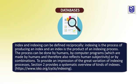We have to understand which is the process and what is the product. The process can be done by humans, by computer programs which are made by humans and therefore also refers to human subjectivity, or by a combination, to provide a greater variation of indexing processes. Section 2 provides a systematic overview of kinds of indexing.